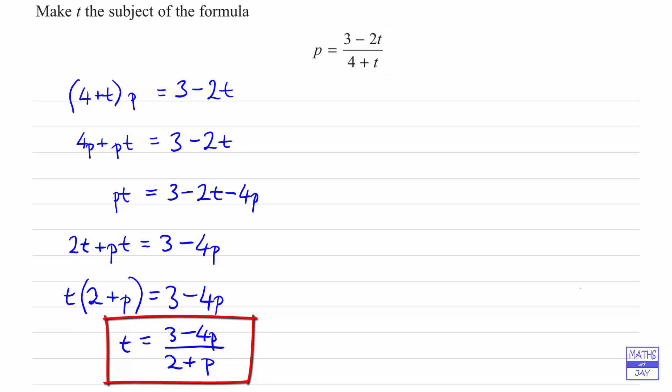Now you've got to be careful what you try out for your t. You don't want to try something really simple like 0, and I would avoid something like 1 minus 1 as well. In this case we wouldn't want t to be negative 4, because we wouldn't want the denominator, the 4 plus t, to be equal to 0, because we can't divide by 0.